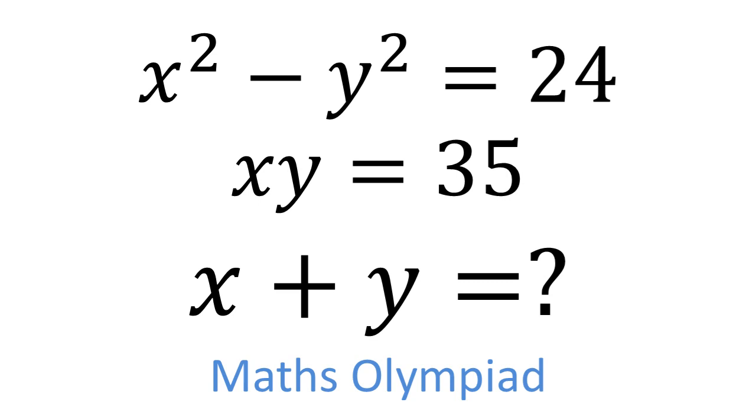In this Maths Olympiad question we're given that x squared minus y squared equals 24 and xy equals 35. Using these we need to work out what x plus y equals.